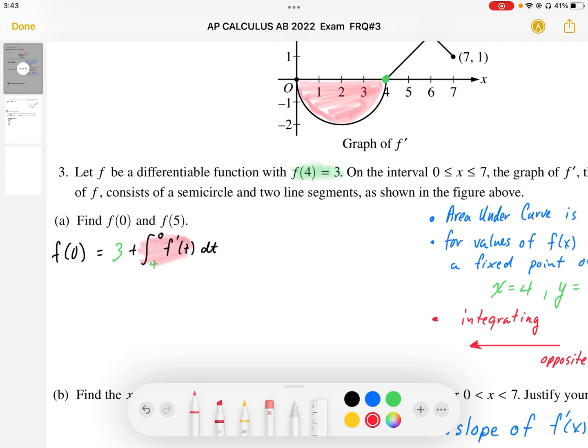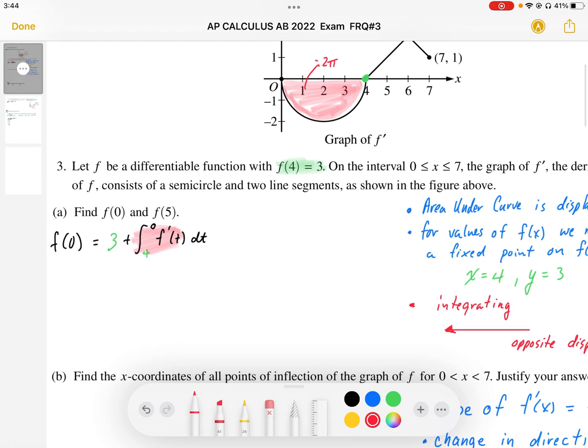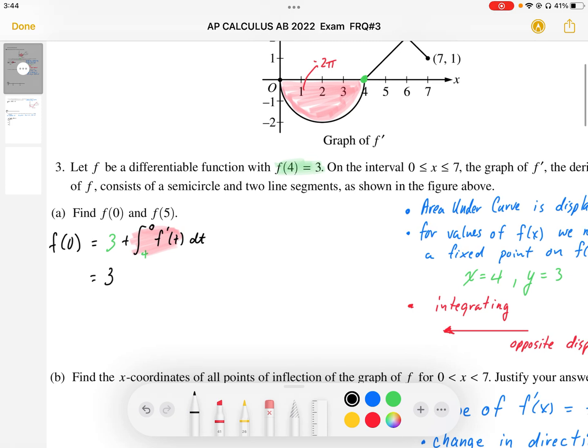Calculating this area, this area works out to be the radius is 2, so 2 squared times pi divided by 2. This area is going to be 2 pi. But since we're going in the opposite direction, although the area is negative, we're going backwards. That means it's going to be positive displacement. So when we calculate f of 0, we're going to end up with 3 plus 2 pi. So that's my f of 0.